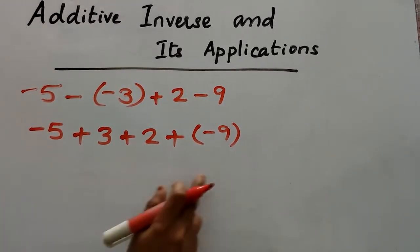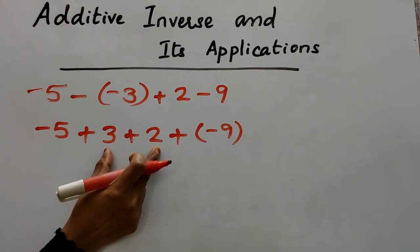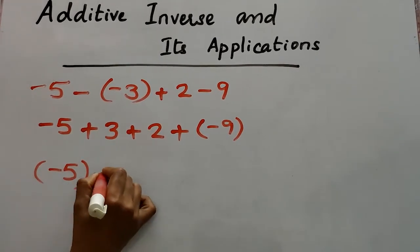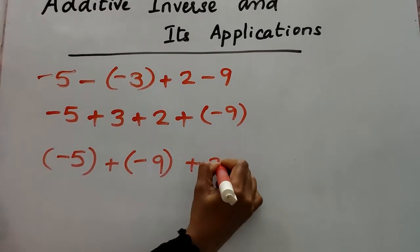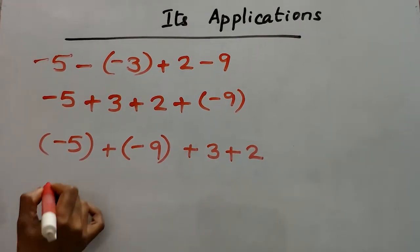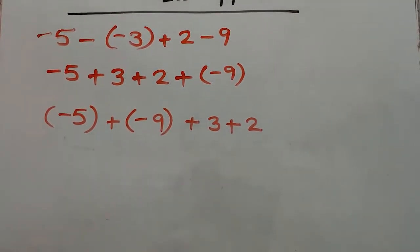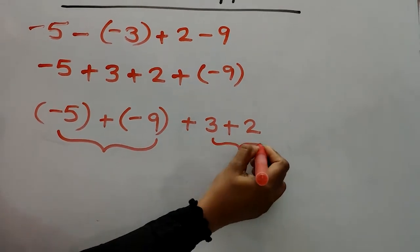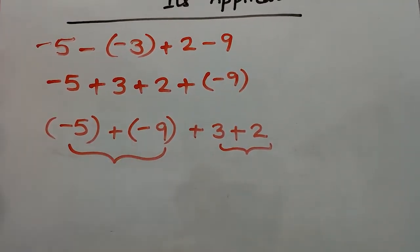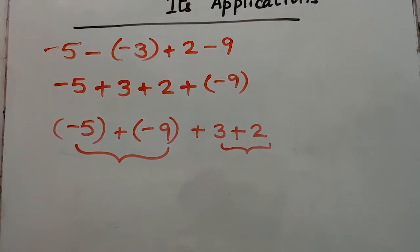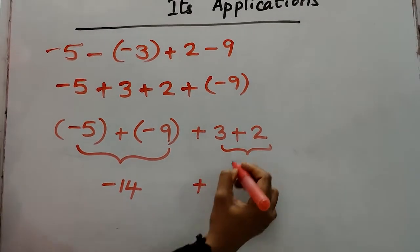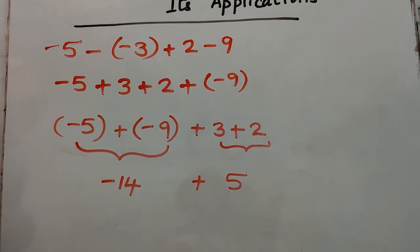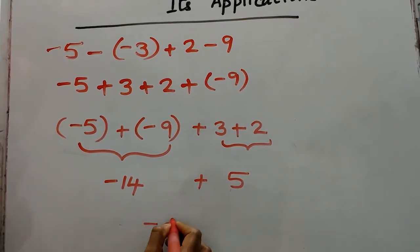Now two negative numbers and two positive numbers came, so we rearrange: negatives together and positives together. So: negative 5 plus negative 9, plus 3 plus 2. Adding the two negatives gives negative 14. Adding the two positives gives 5. Now one is negative and the other is positive, so subtract and put the sign of the bigger number. The answer is negative 9.